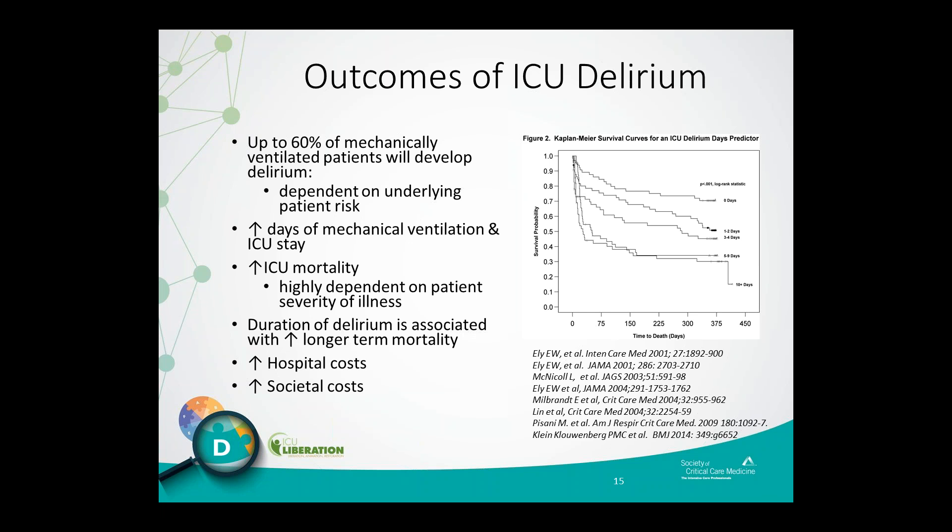One of the most important findings, shown in multiple studies, is that the number of days or duration of delirium is associated with increased longer-term mortality, ranging from six months up to one year. This Kaplan-Meier curve simply shows that as the number of days of delirium increases, survival drops. When we recognize delirium, there's a lot we try to do to decrease its duration. Increased hospital costs and societal costs also follow.